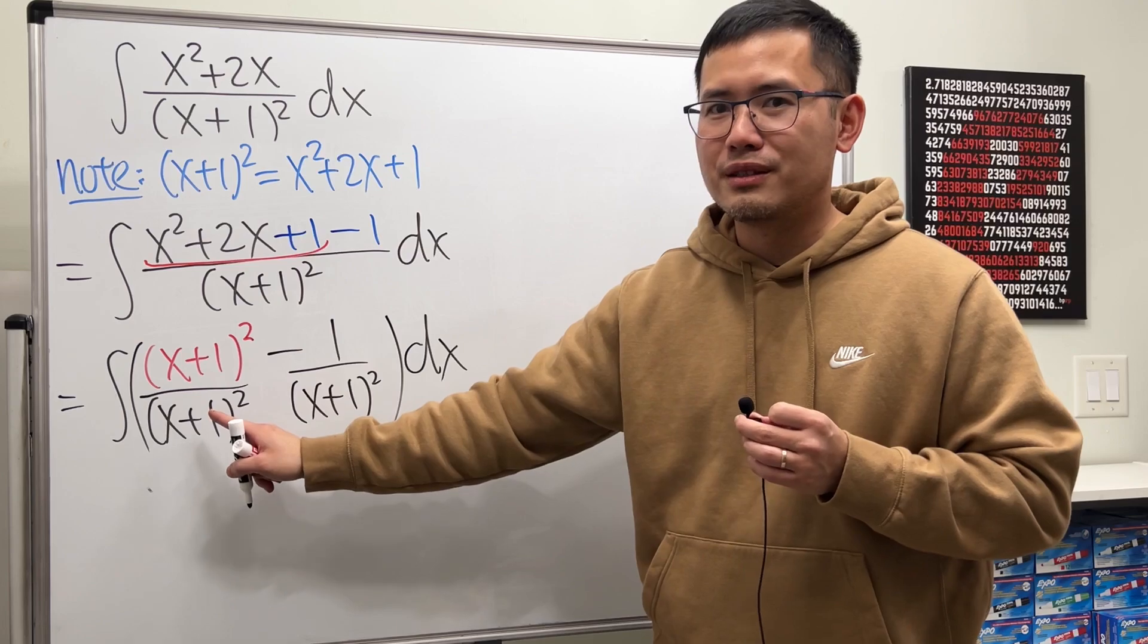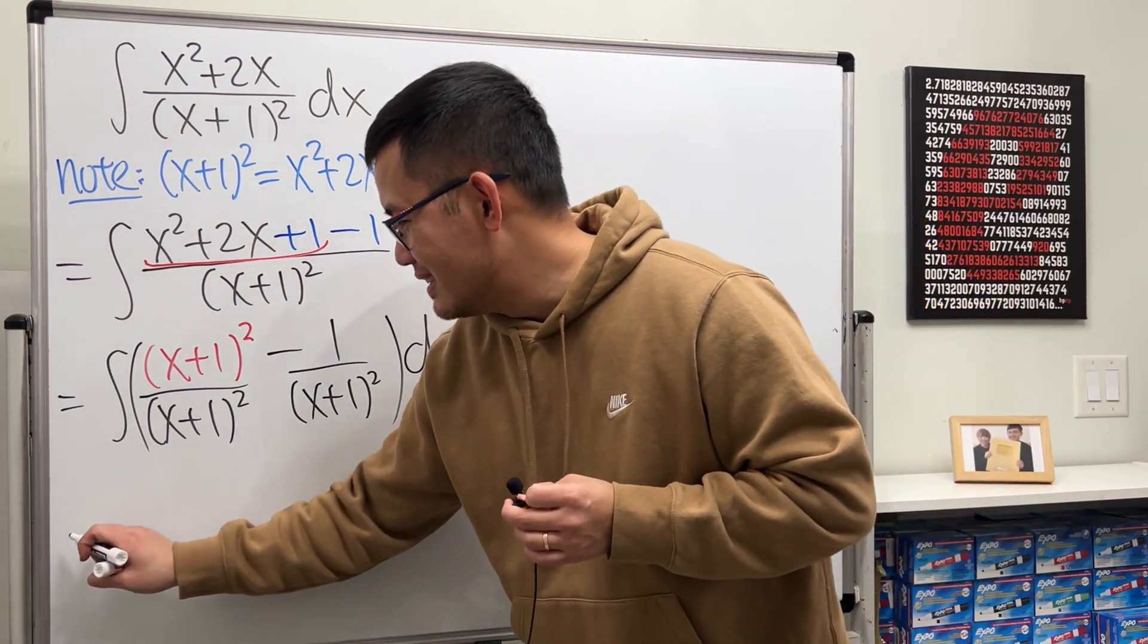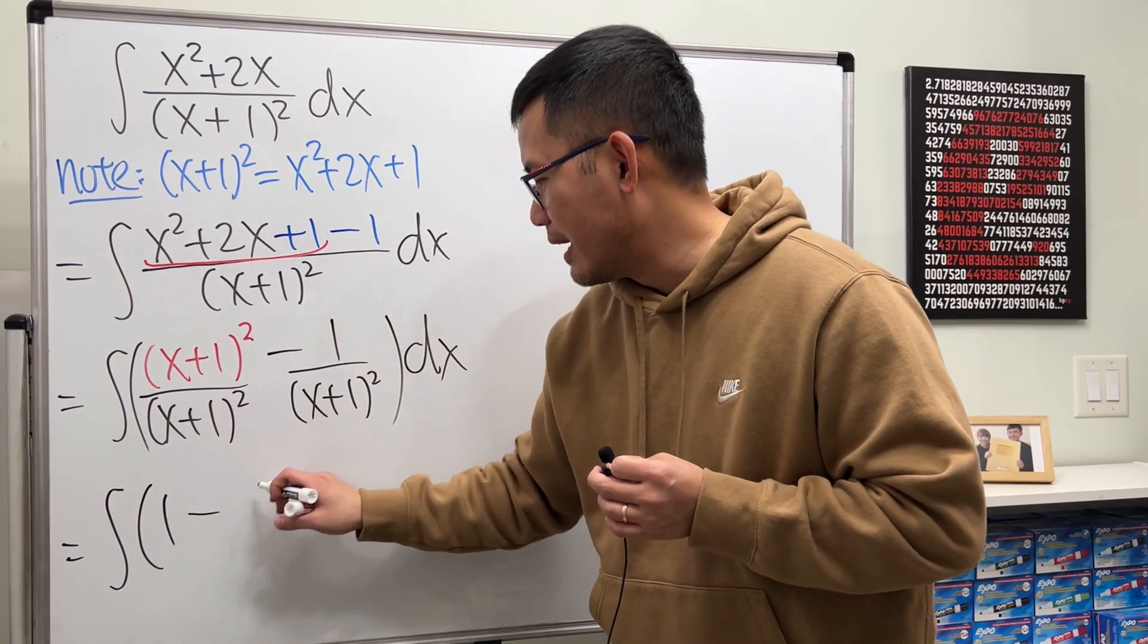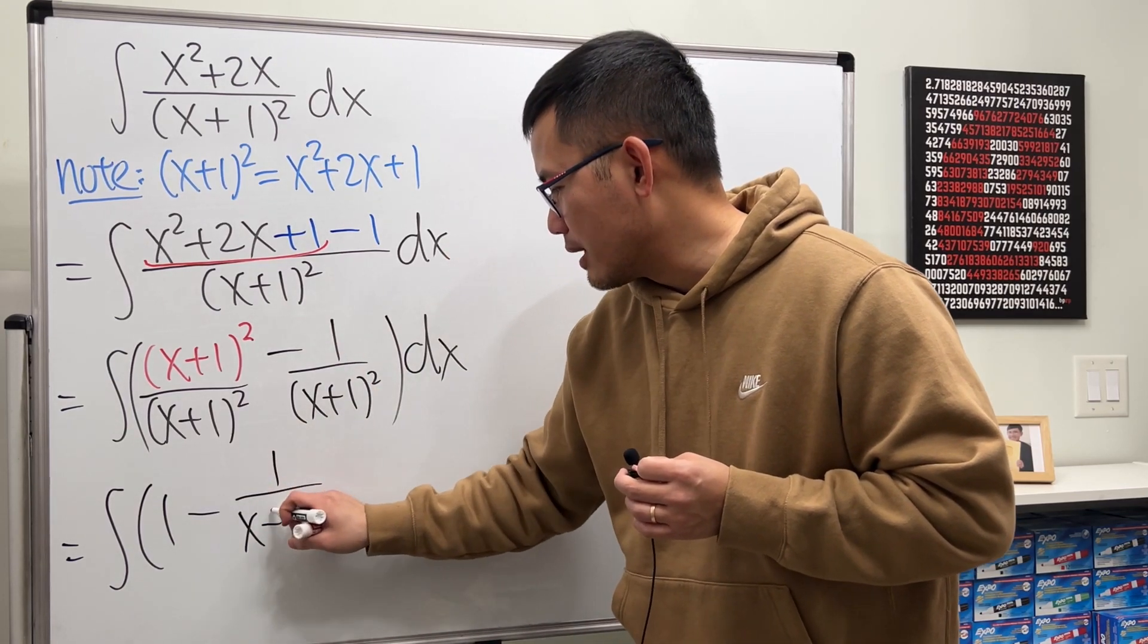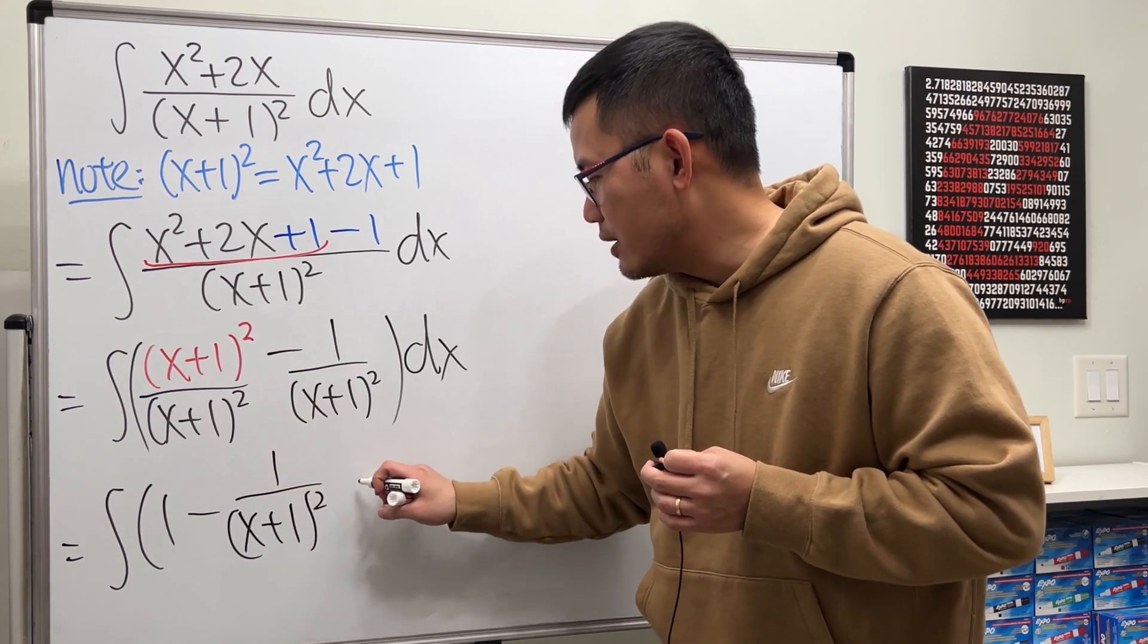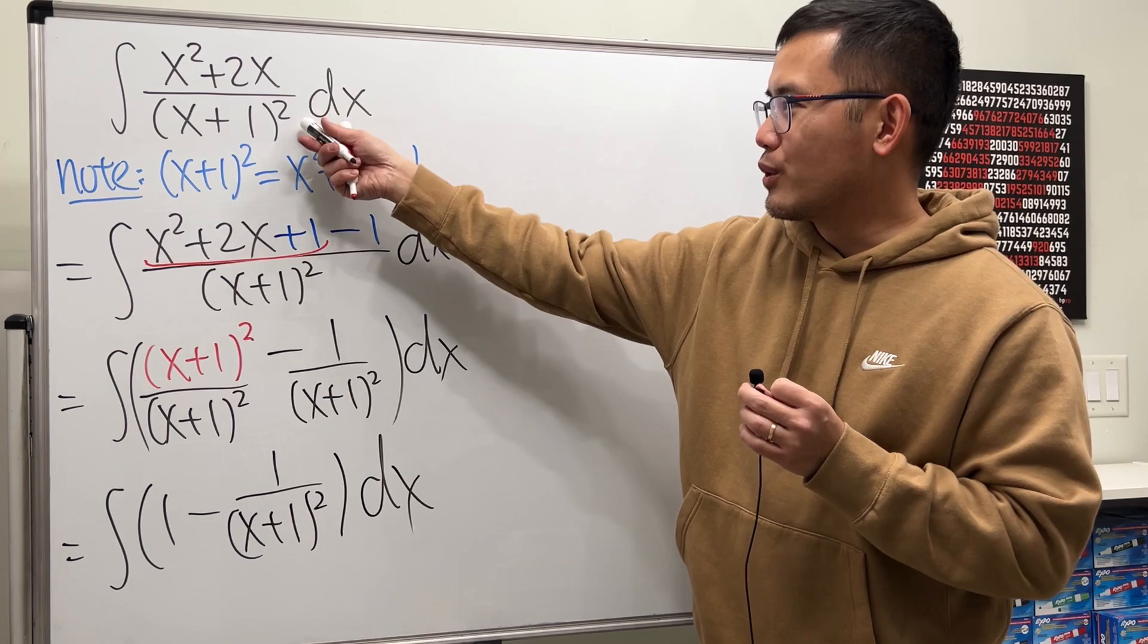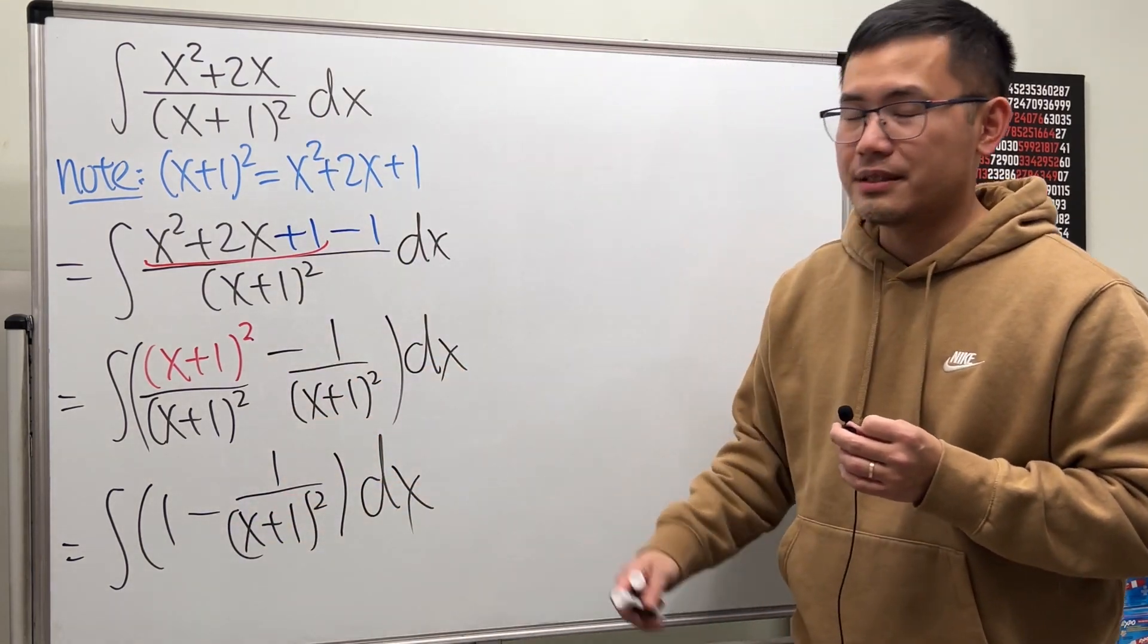Now, what's the first part? Yes, it's just 1. So this is exactly how we get that 1 right here. And then we have the minus 1 over x plus 1 squared. So there you have it. That's how we go from here to the 1 minus.